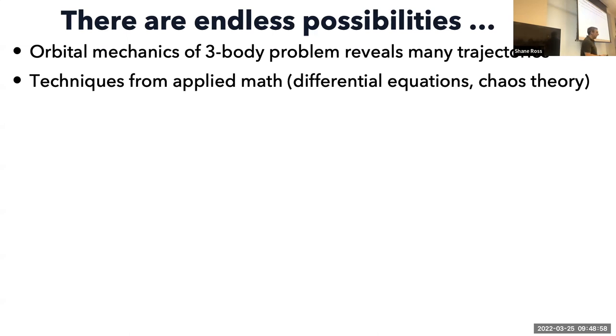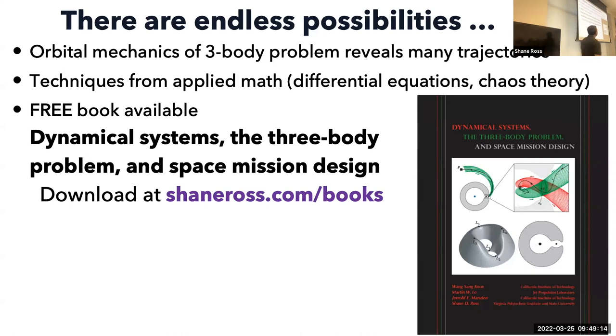Hopefully I've given you an idea that the three-body problem, it's not just about the Lagrange points and Lagrange point orbits, although those are interesting. There's also all kinds of other possibilities, especially if you're willing to trade time for fuel. If you want to save on fuel, these are good methods to use. We revealed there's many trajectories. The techniques involved can get you into a lot of applied math, like differential equations, chaos theory. There's a lot to it. If only there was a book that covered these things. We wrote a book, me and my PhD advisor and a guy from JPL and another colleague from Caltech. We just made it free because we knew there's like 20 people who care. It's just a free PDF. If you want, you could download it.